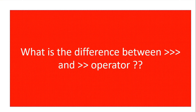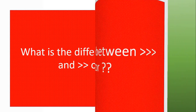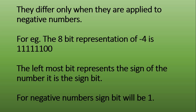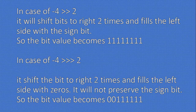Can you tell me the difference between the two right shift operators? The first one is the logical right shift operator (>>>) and the second is the arithmetic right shift operator (>>). They differ only when applied to negative numbers. For example, the 8-bit representation of -4 is 11111100. The leftmost bit is the sign bit — for negative numbers it is 1, for positive numbers it is 0. With arithmetic right shift on -4 by 2, the bits shift right and the left side is filled with the sign bit.